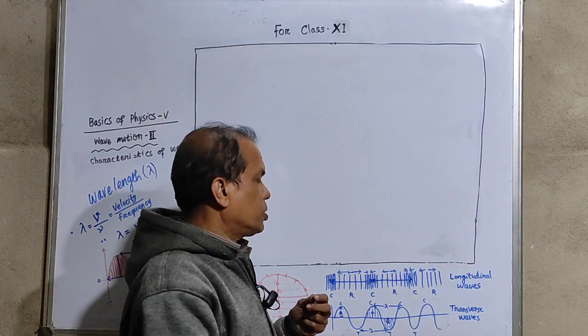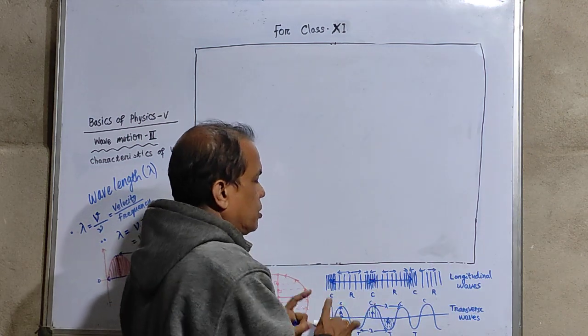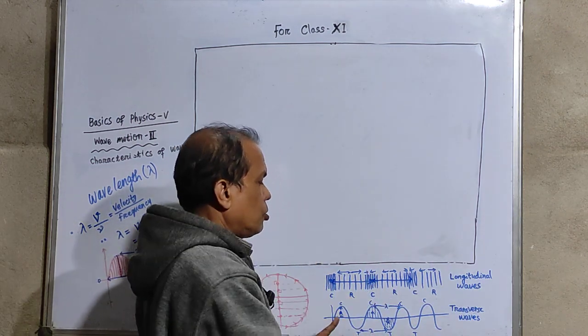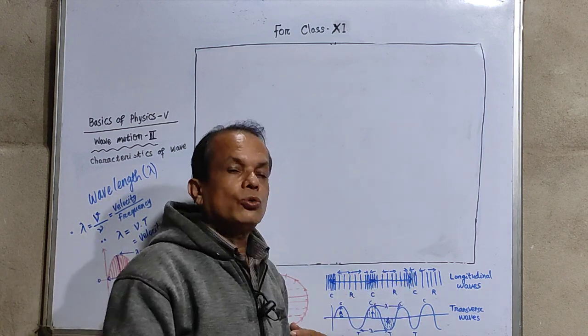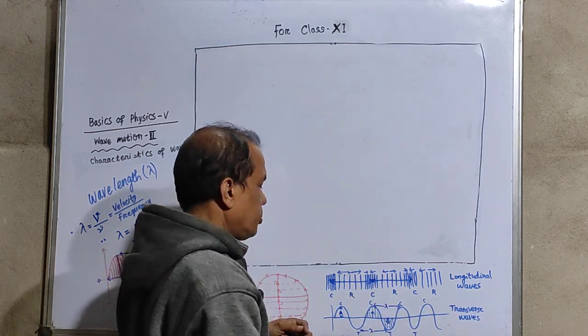For longitudinal waves, between the compressions or between two rarefactions, the length is known as wavelength.